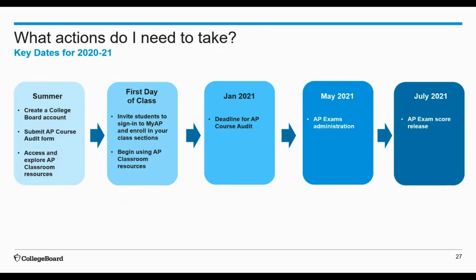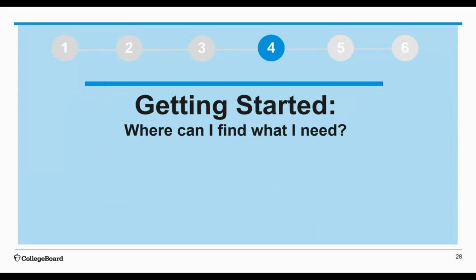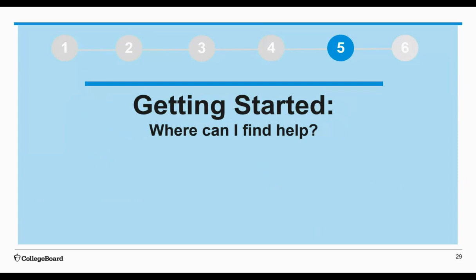In addition to looking at the resources, I would like to show you where you can take some of these early actions. So let's try to answer those questions now by going straight over to AP Central for a quick glance. If you have the opportunity, it may be helpful to pull up apcentral.collegeboard.org in a separate browser and follow along so that you can bookmark some of the key places and get a sense of where to go. I am going to head over there now and share my screen.